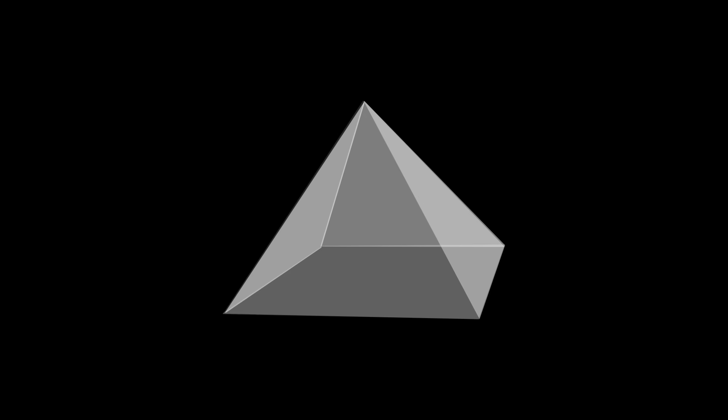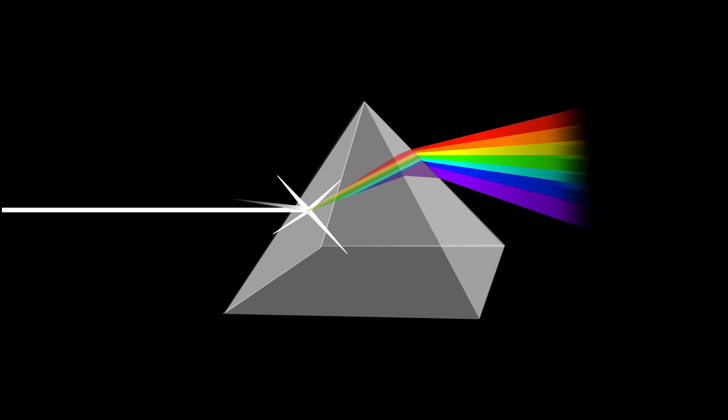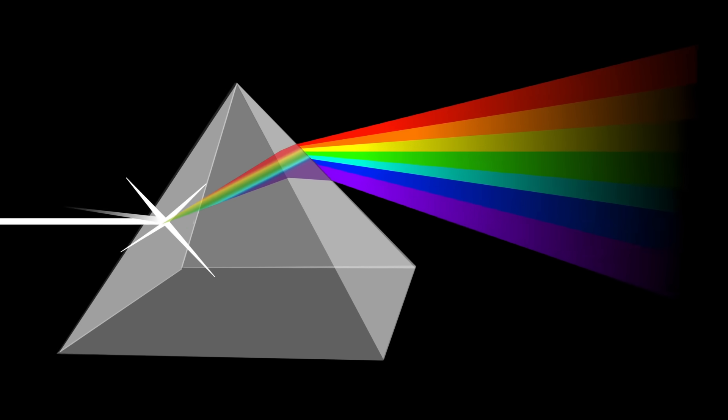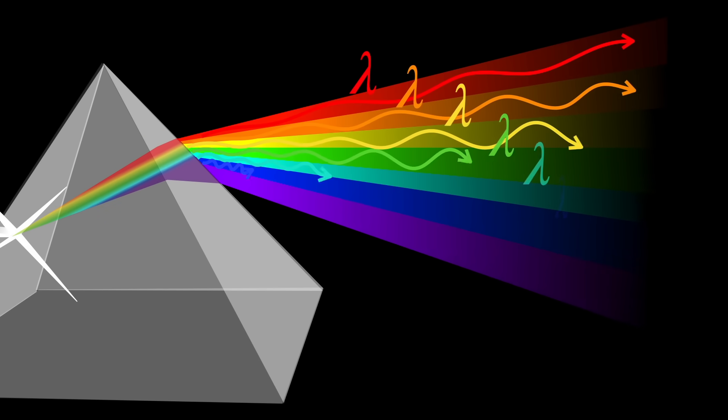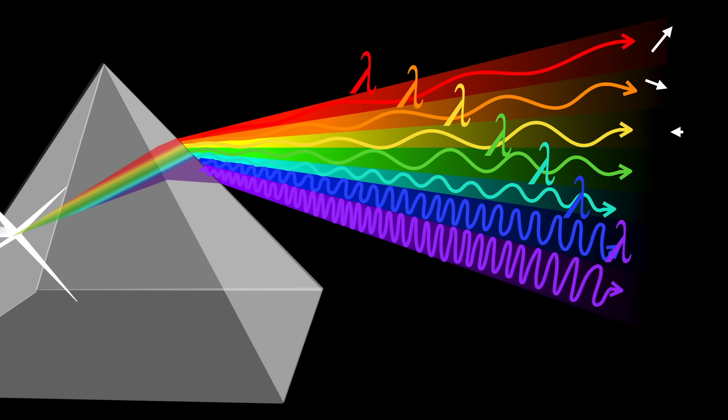To appreciate its importance, it helps if we first understand why it's called that. Imagine shining light through a prism. What happens? The prism splits the light into its spectrum of colors, each with its own wavelength. Even though the white light looks uniform, it's actually made up of many different components, each contributing in its own way.